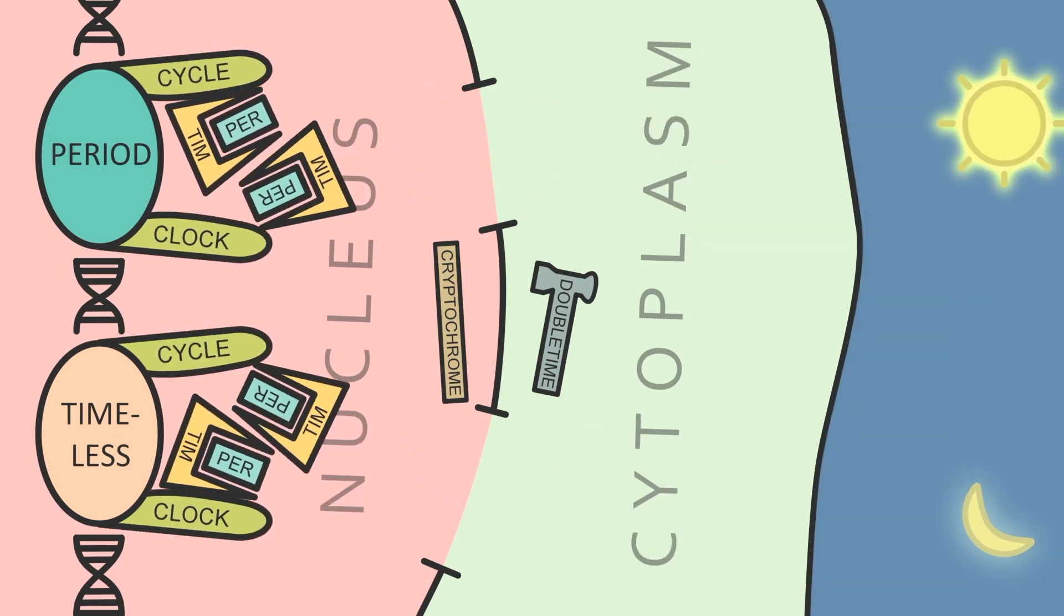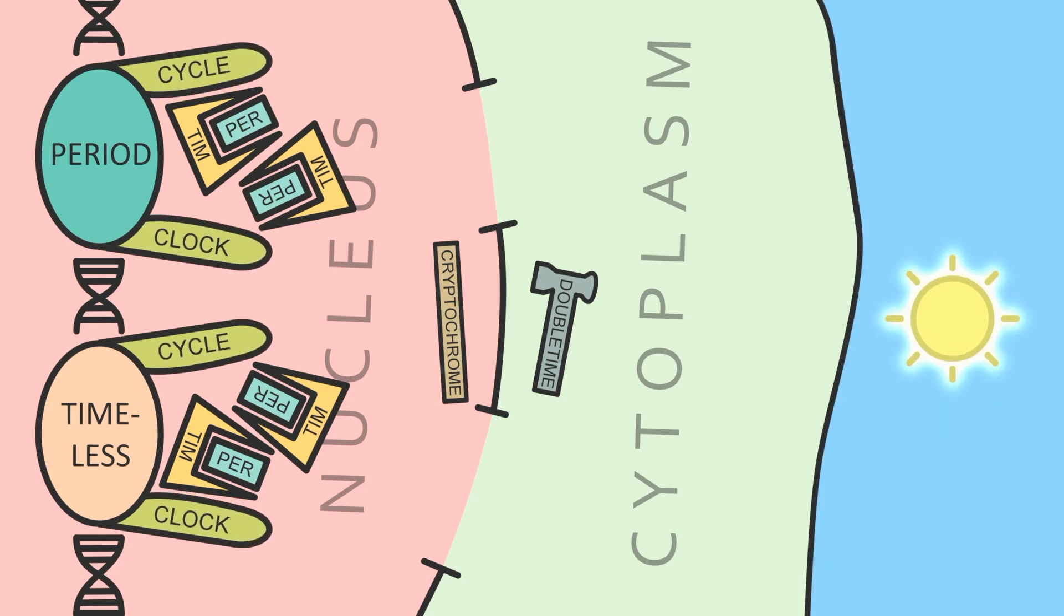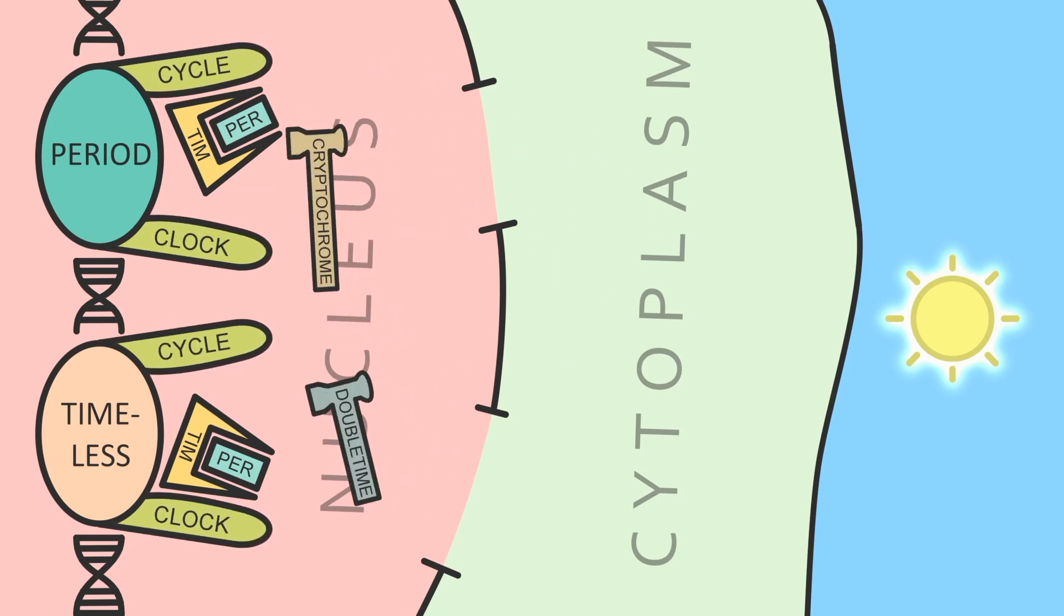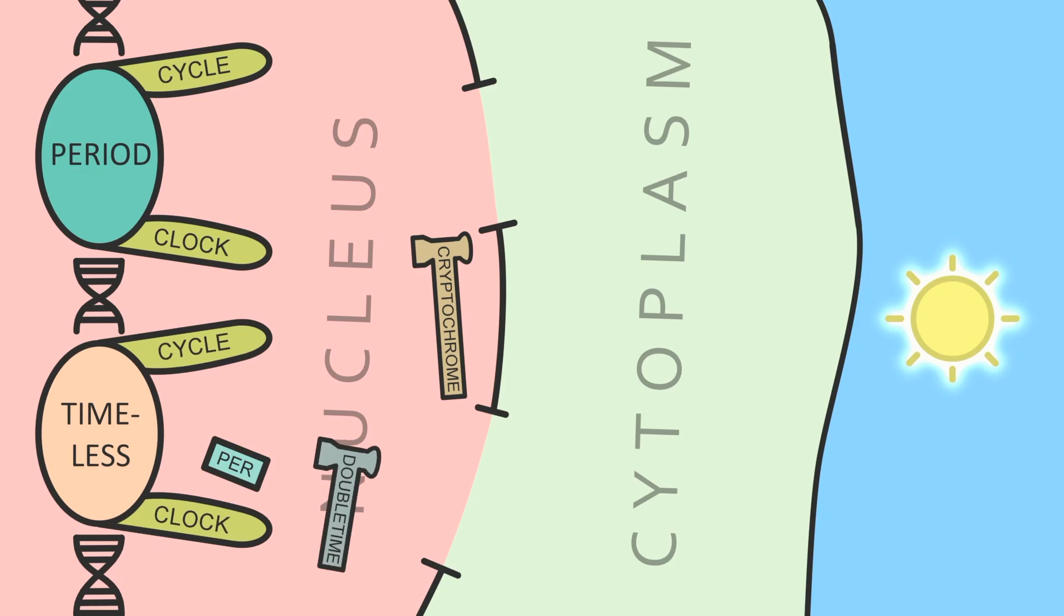However, in the morning, the sunlight does something interesting. Cryptochrome, which does nothing most of the time, changes its shape when light hits it and it starts breaking TIM, which allows Double Time to break PER. This restarts the cycle.